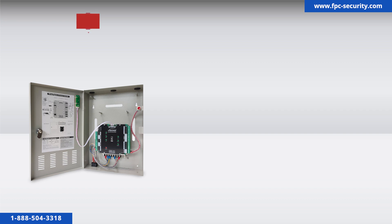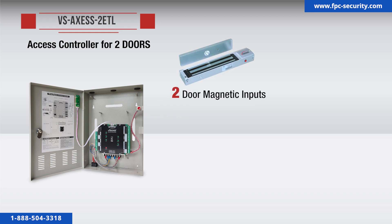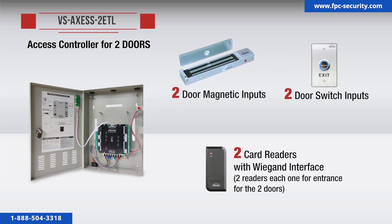The VS Access 2 ETL version 2 is an access controller for two doors. This system can connect up to two door magnetic inputs, two door switch inputs, and two card readers with Wiegand interface — two readers, each one for entrance for the two doors, or one for entrance and one for exit for one door.